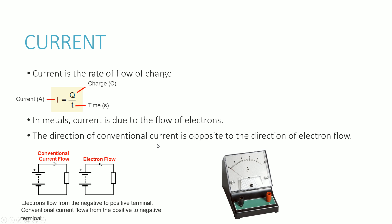The first thing we're going to be looking at is current, which is basically the rate of flow of charge. The equation for current is I for current, measured in amps; Q is charge in coulombs, and t is time in seconds.